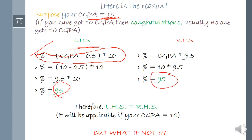So you will think that both formulas are giving the same result and therefore both are the same. But no — this only works if your CGPA is 10, which is the full mark, so you cannot use this example alone to validate the formula.